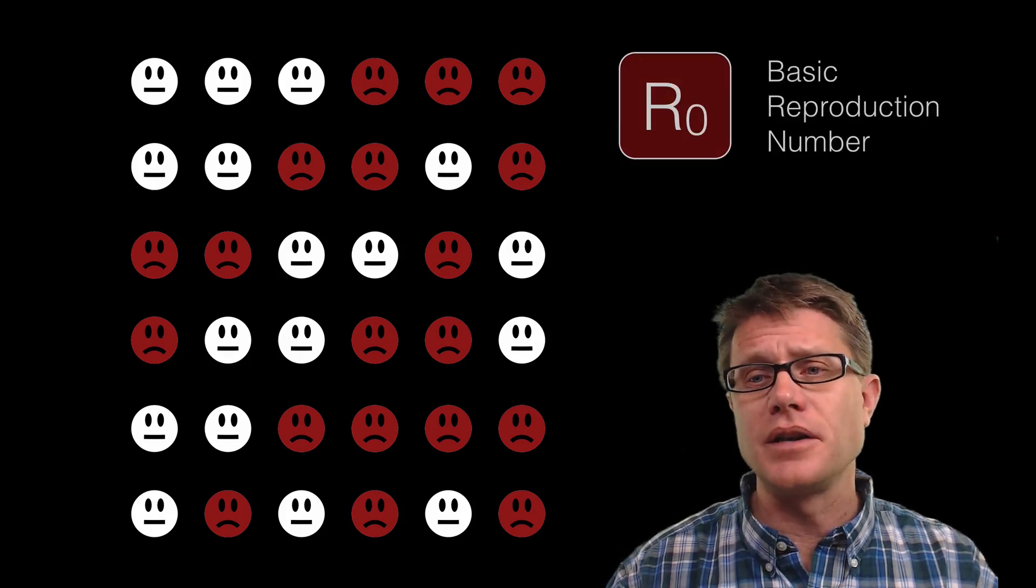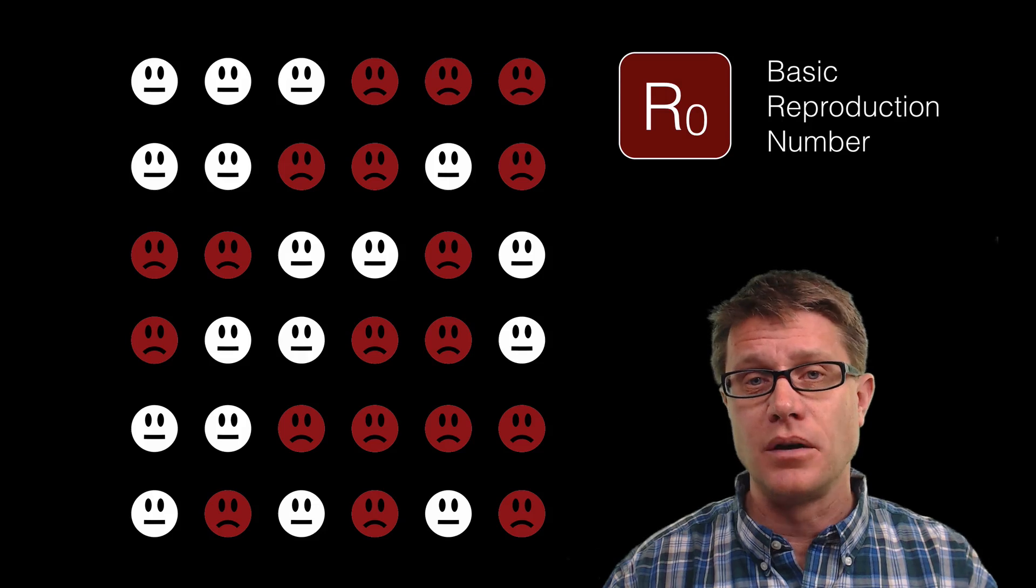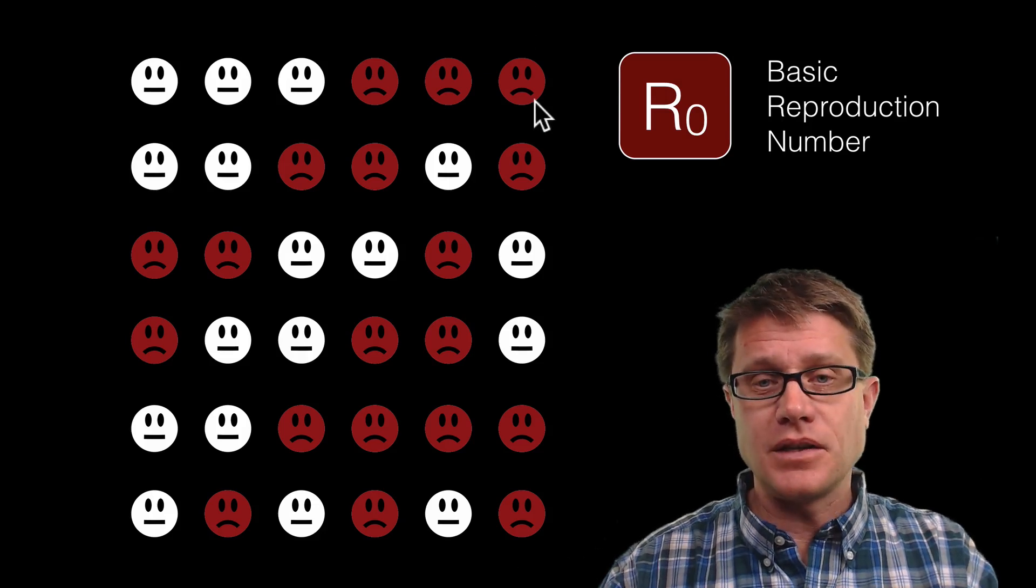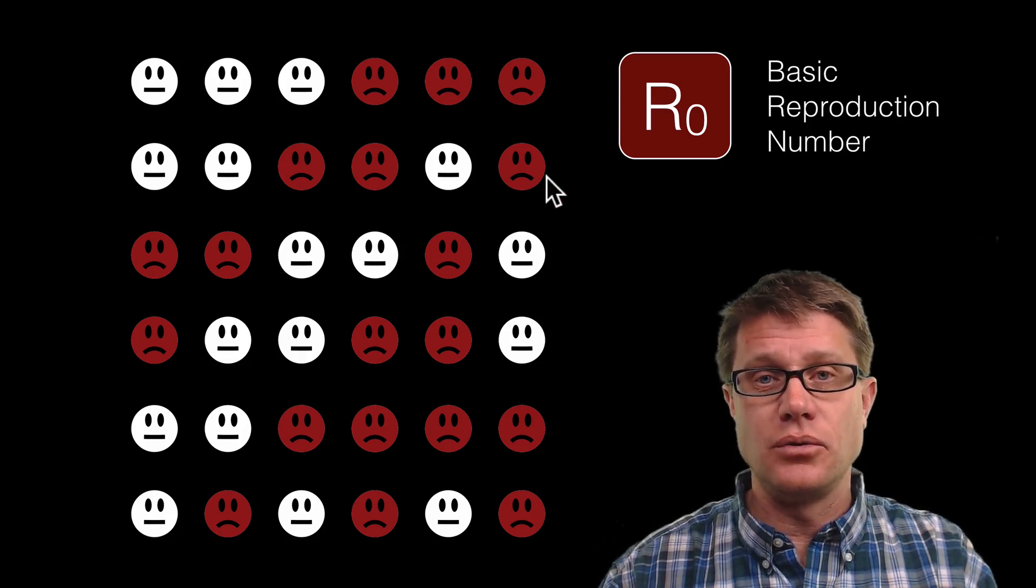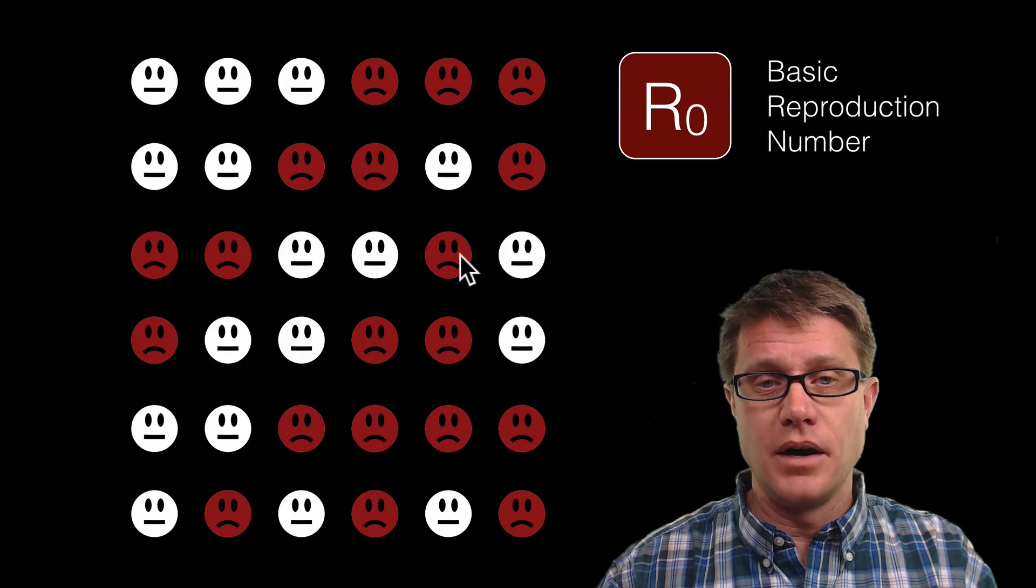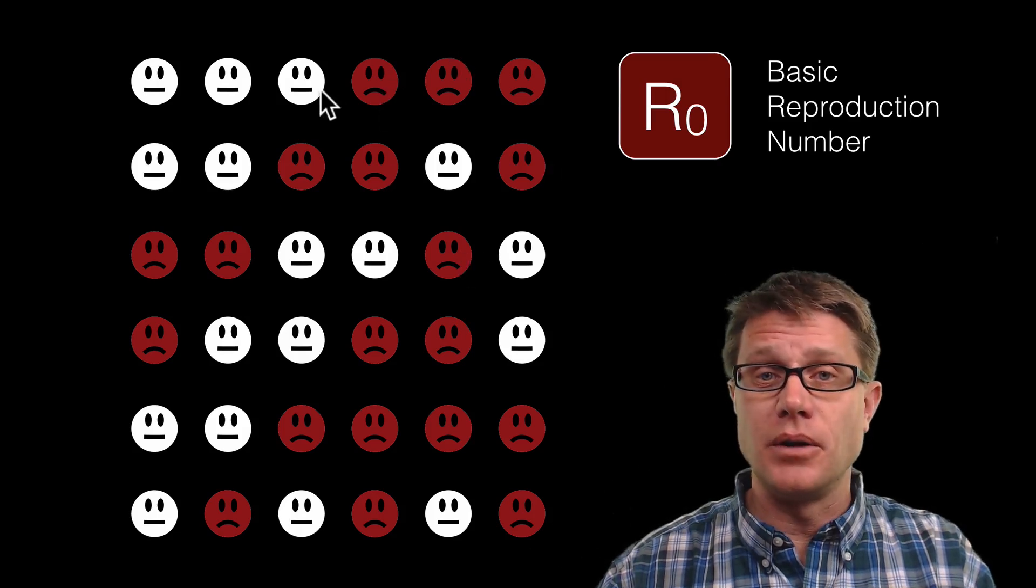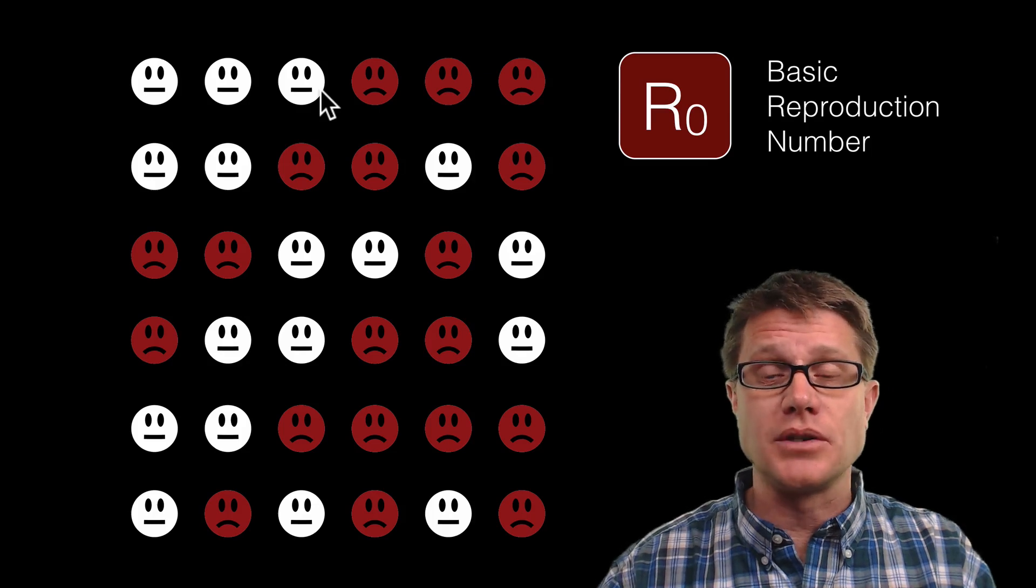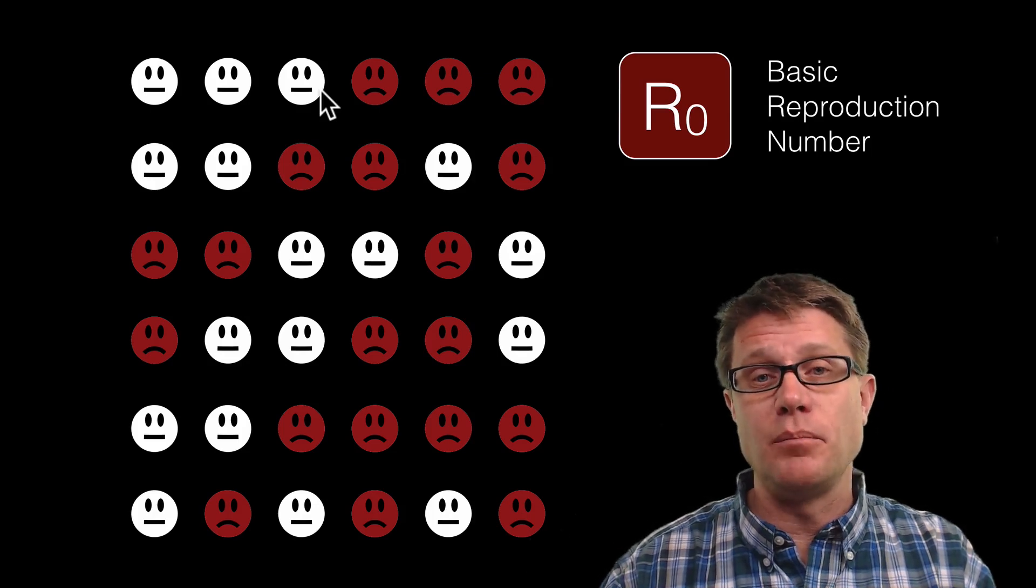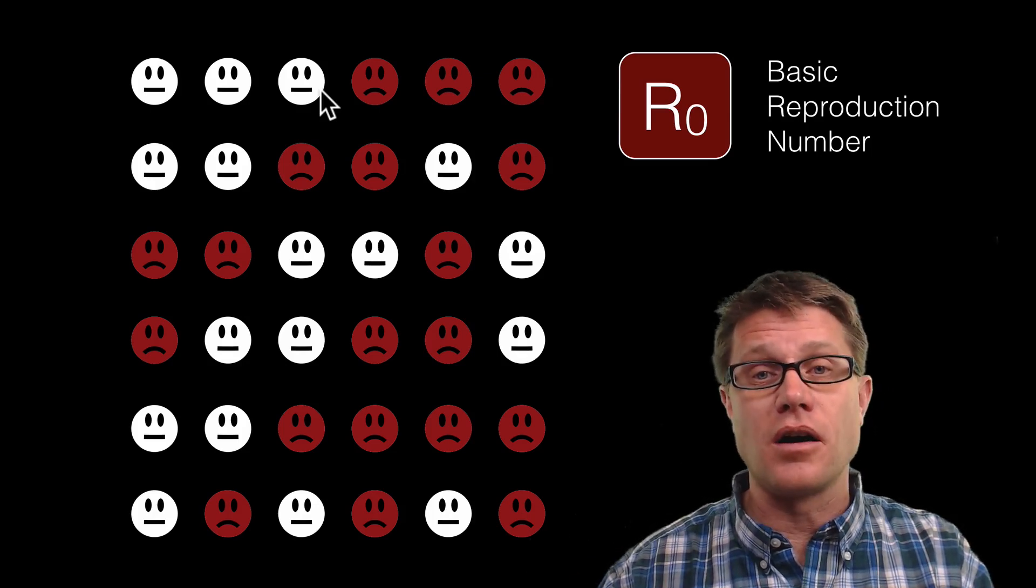Now how quickly a disease spreads through a population is based on how many people you can infect. And we call this the basic reproduction number. For this individual they infected two. This person infected one. This person infected two. This person infected zero. And if I take a number of those individuals and find their average, that is going to be my basic reproduction number or R naught.